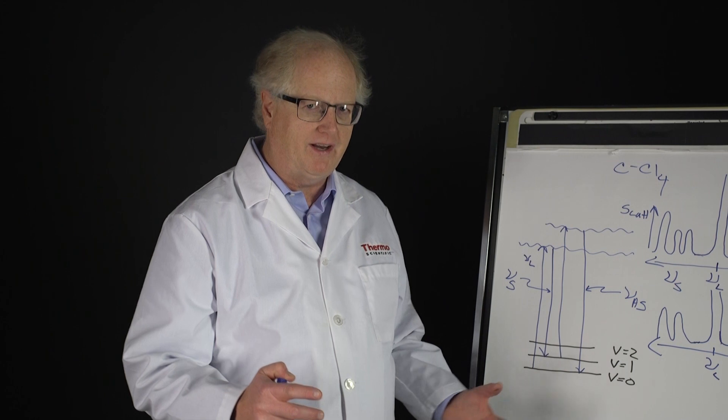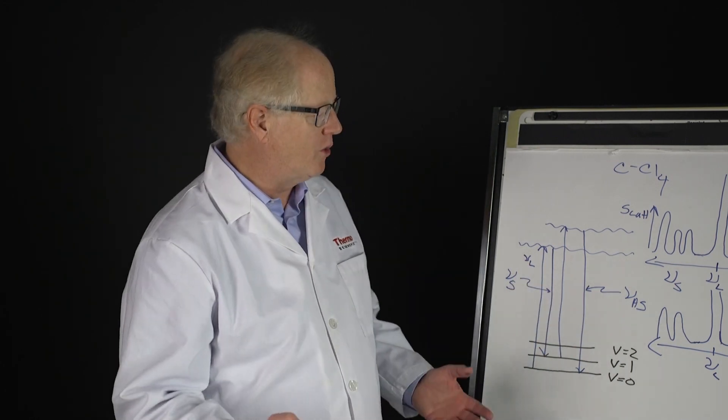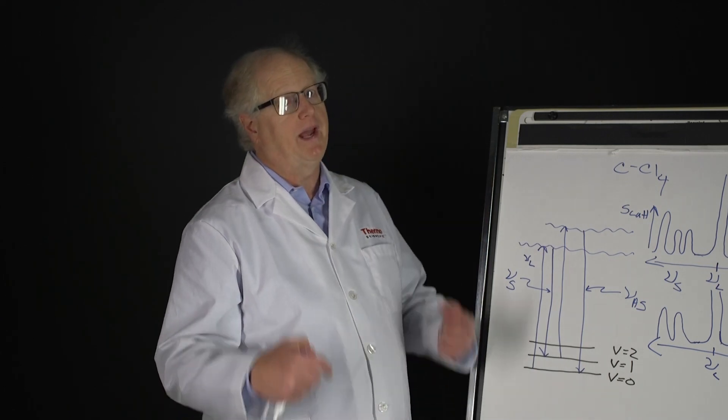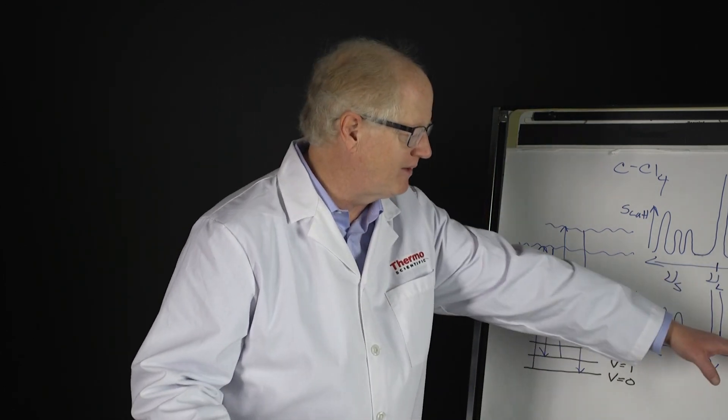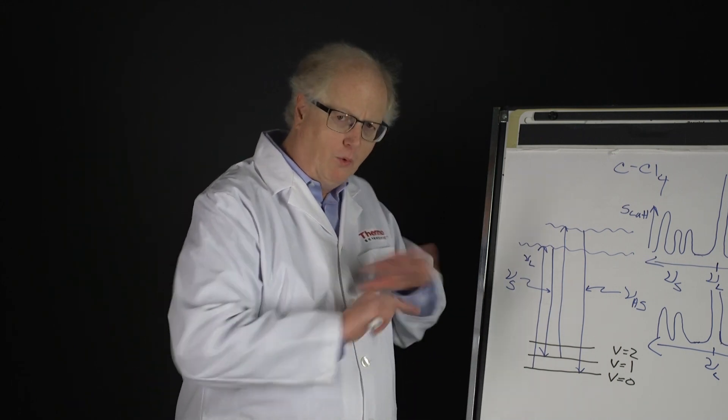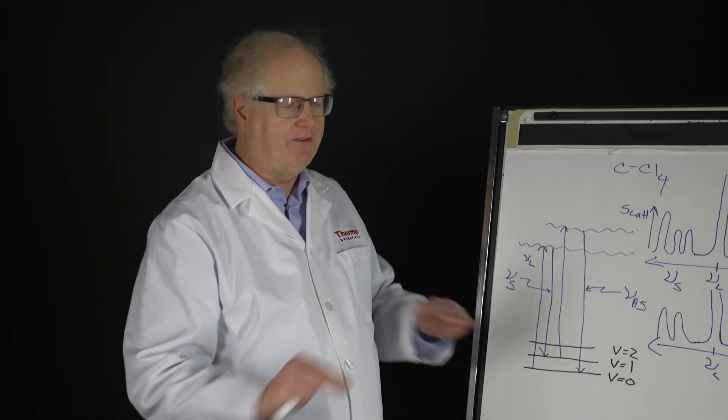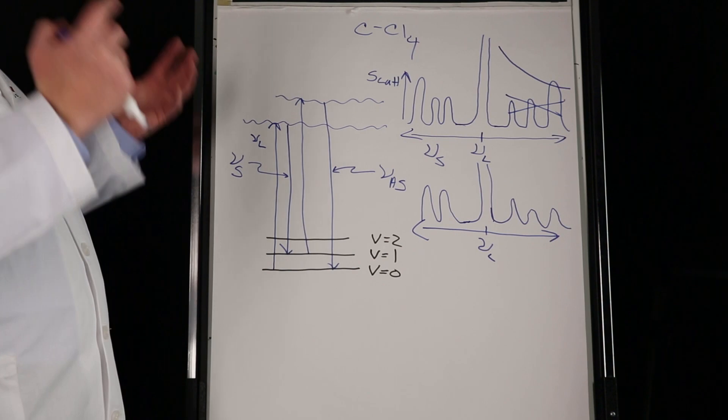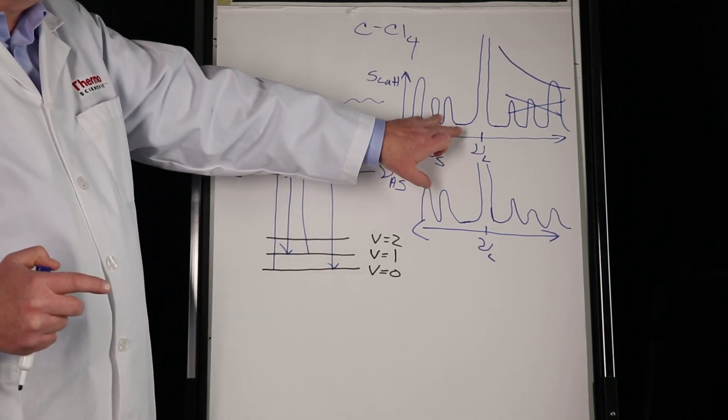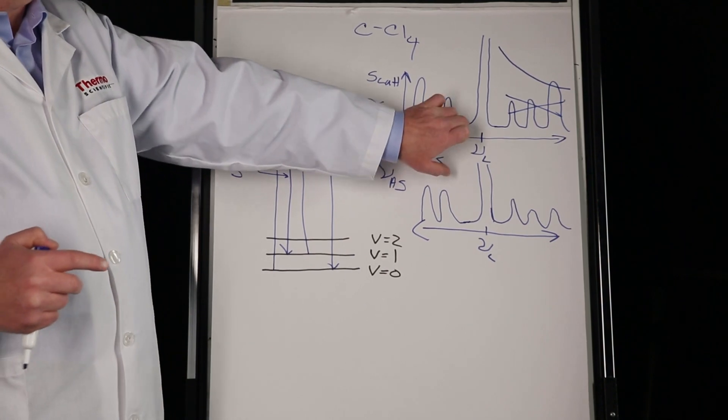Anti-Stokes side intensities are generally lower. There are specialty techniques like what's called CARS, coherent anti-Stokes Raman spectroscopy, where you do things, but that requires multiple lasers. You actually have to pump the energy into the energy levels. We're not talking about that. We're just talking about spontaneous Raman. So if you just had a system with carbon tetrachloride molecules in it, what you'd see is the Stokes peaks - one, two, three. There's more, but those are the big three.